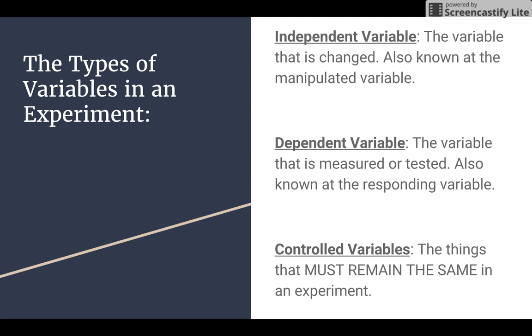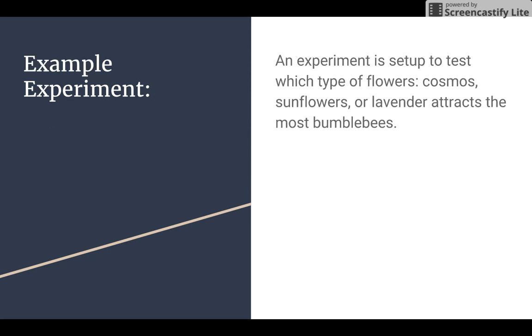And so what we're going to do today is we're going to look at an example experiment and identify these variables. And our example experiment is an experiment is set up to test which type of flowers, cosmos, sunflowers, or lavender attracts the most bumblebees.